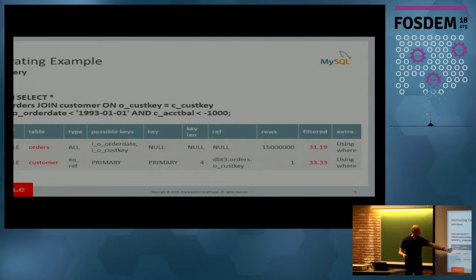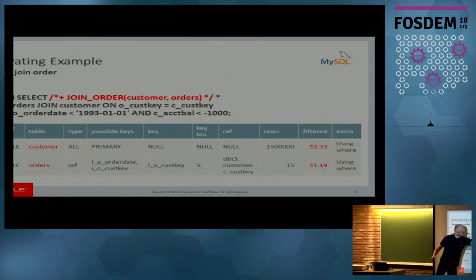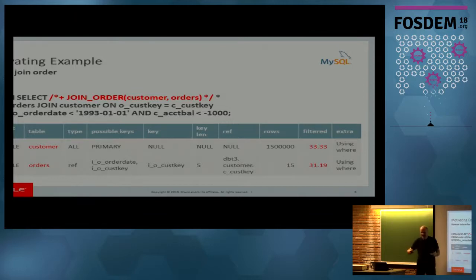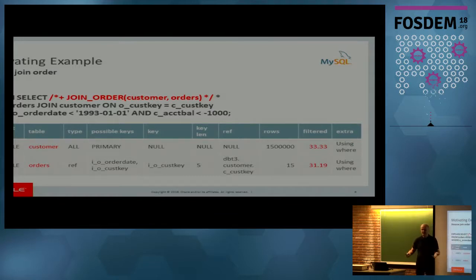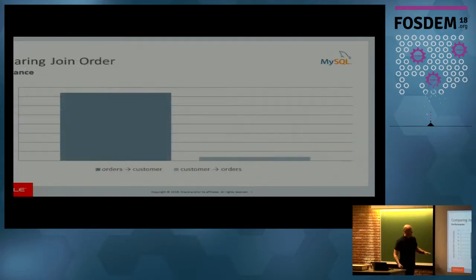You might wonder: is this really the best join order? One way to try the difference is to use a hint. In MySQL 8.0 I can force the join order with a hint, specifying that customer should come before orders. In earlier versions, you have STRAIGHT_JOIN to do the same, but then customer has to come before orders in the actual query. This new hint has the advantage that you don't have to edit your query to specify the join order.